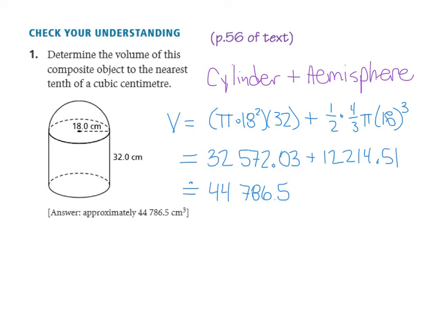If you're someone who feels more comfortable taking a look at the volume as two separate pieces, we have our volume of our cylinder and our volume of our hemisphere shown. When we add these together, we're going to see a total volume of 44,786.5.